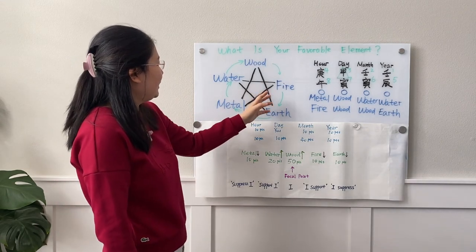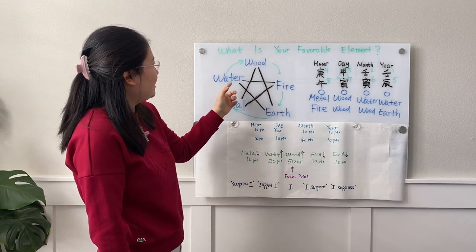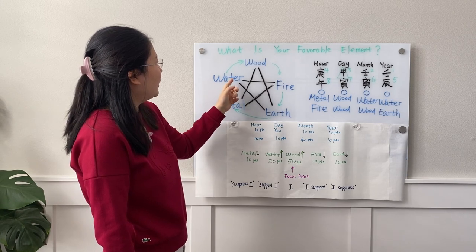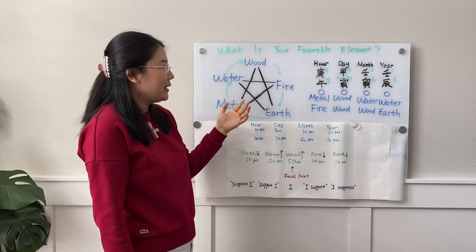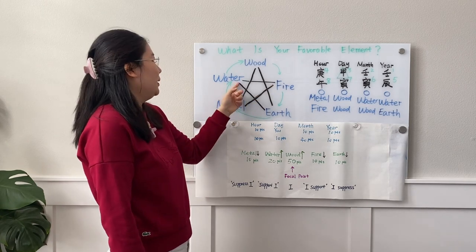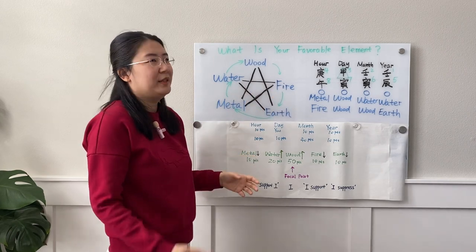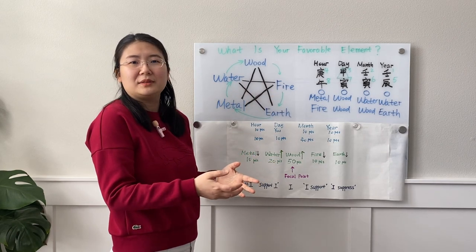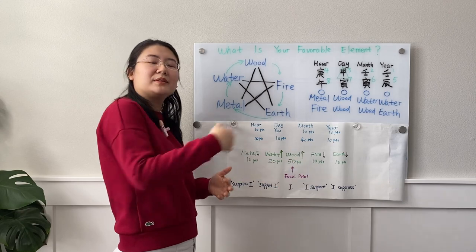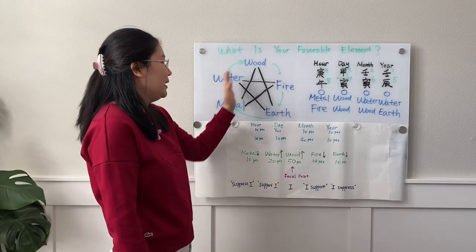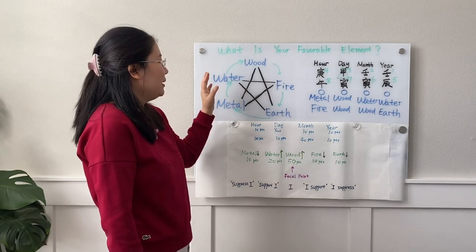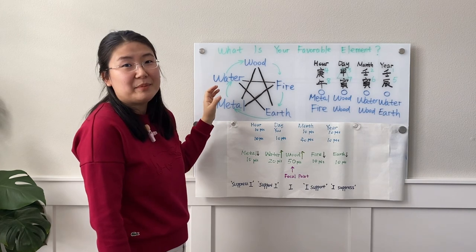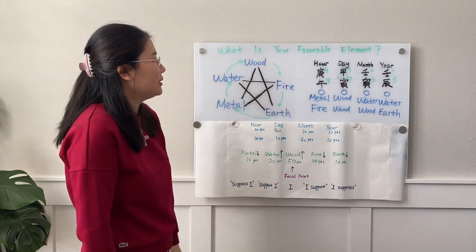That's the fascinating nuance of Chinese culture — it's not a simple one-on-one relationship; it has many different approaches to analyze the situation. Another quick example: water and fire. Most of the time water will suppress fire, but if the fire is so big and the water is so small, then fire will suppress water. So that's the three different dynamics amongst the five elements.